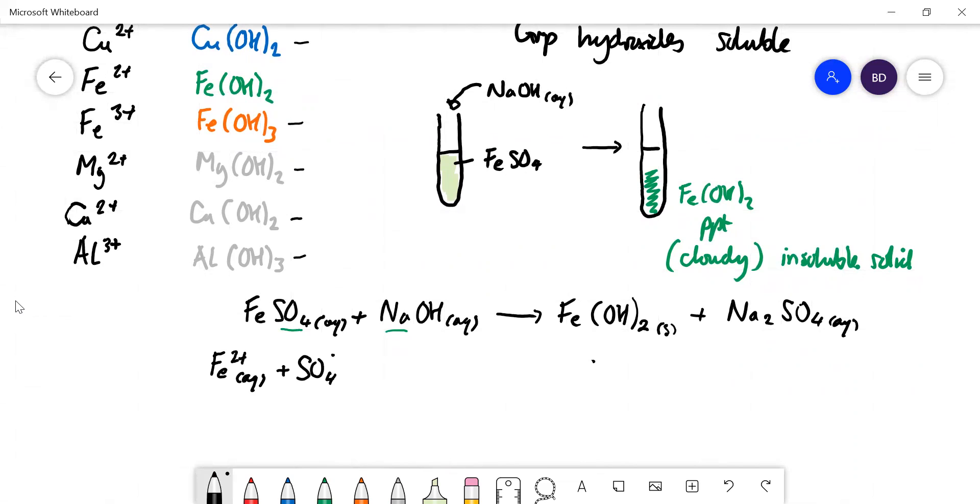Then you're going to have - I'll leave the state symbols off here because they're all aqueous - we need a two Na there to balance. Then we're going to have 2 Na+ ions in aqueous solution, 2 hydroxide ions in aqueous solution. That isn't aqueous solution, it's a solid, so I'm going to write the full formula. Here this is in solution, so it's 2 Na+ and SO4 2-.